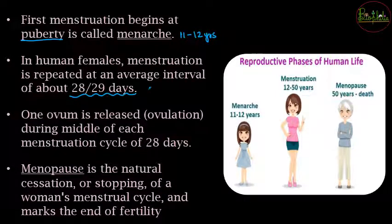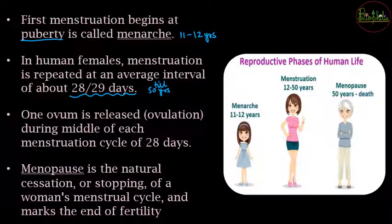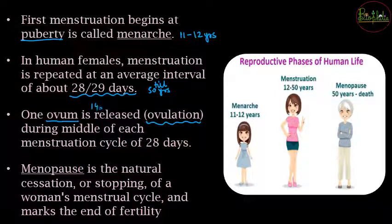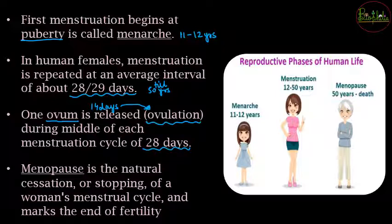This cycle continues until the female turns about 50 years old. Ovulation occurs at the mid-point of the menstrual cycle — around day 14 in a 28-day cycle. Every month this menstrual cycle occurs for women from around age 12 to 50.